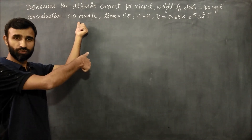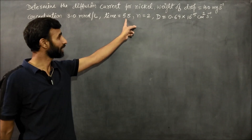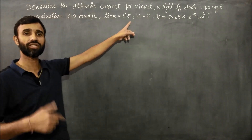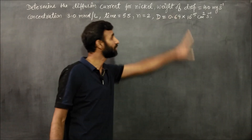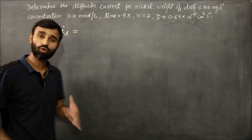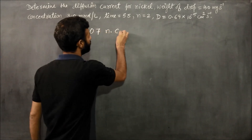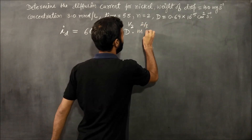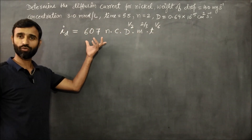The number of electrons gained or lost — meaning the number of electrons exchanged in the electrode reaction — and d, the diffusion coefficient of the electroactive species, are also given. To calculate the diffusion current id, we use the Ilkovic equation: id equals 607 times n times c times d raised to power 1/2, times m raised to power 2/3, times t raised to power 1/6.